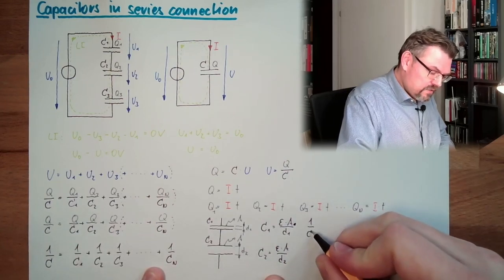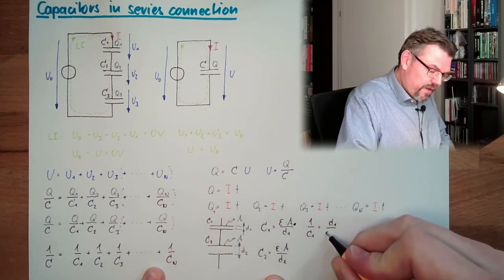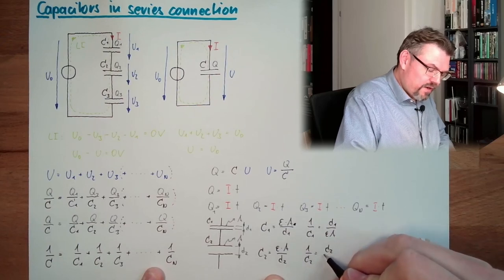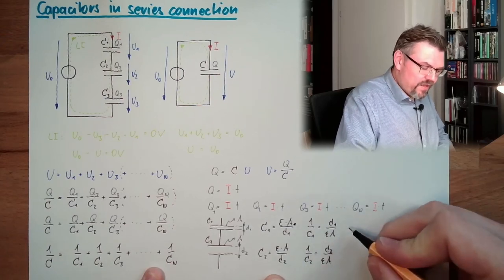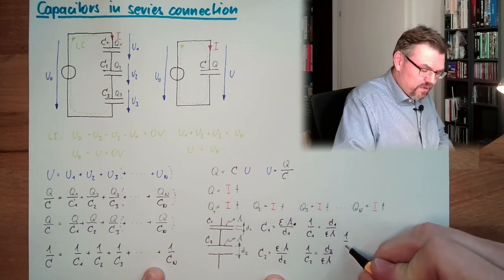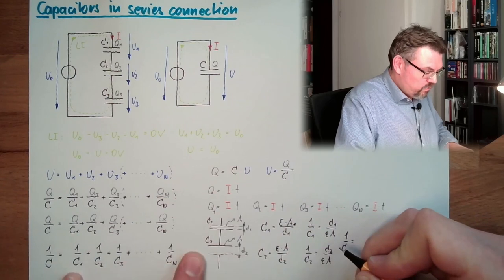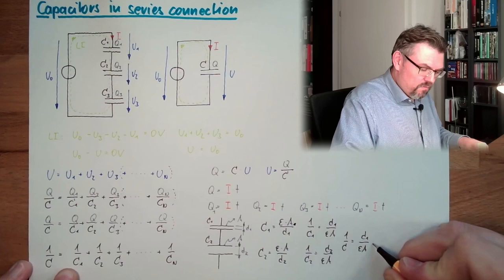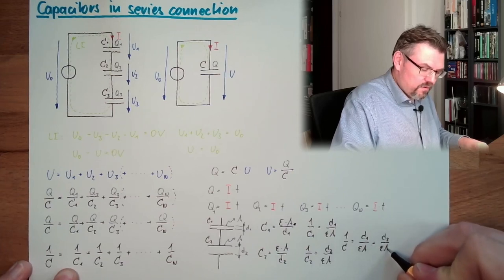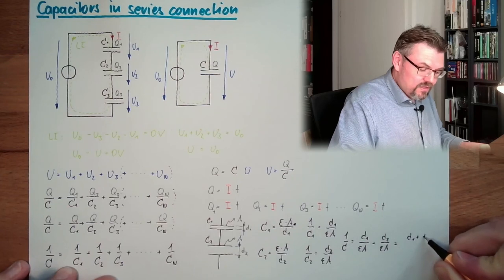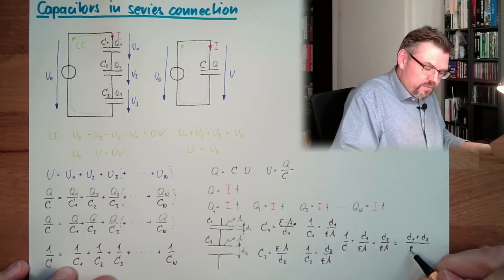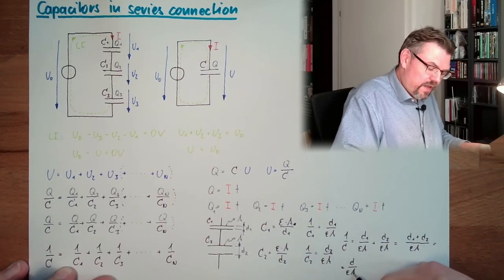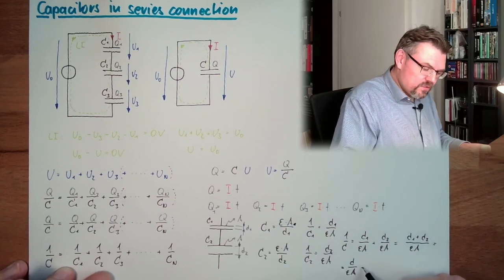So 1 divided by c1 equals d1 divided by epsilon a. 1 divided by c2 equals d2 divided by epsilon a. And the sum of this, this is 1 divided by c equals 1 divided by c1, so we have d1 divided by epsilon a plus d2 divided by epsilon a. So we have here d1 plus d2 divided by epsilon a. So this actually is d divided by epsilon a. And this is 1 divided by c.